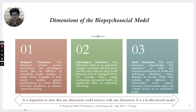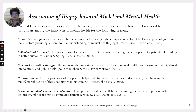It cannot be said that only after the onset of the biological dimension does it move to psychological and then to social. Any dimension can interact with any other dimension — it's a bidirectional model. For example, the social dimension could directly interact with the biological dimension, and both together can interact with the psychological dimension, creating a two-way street at any point in time.